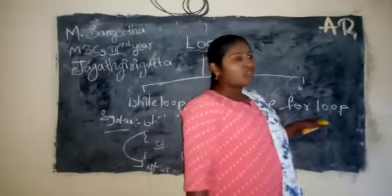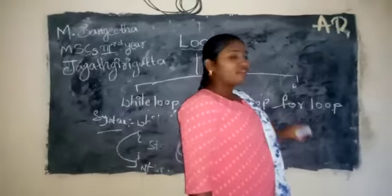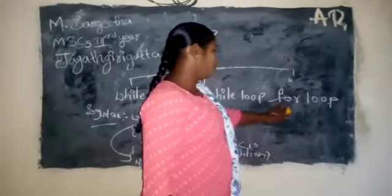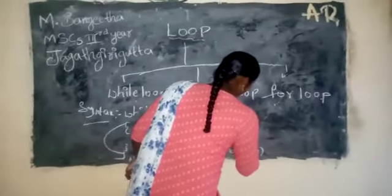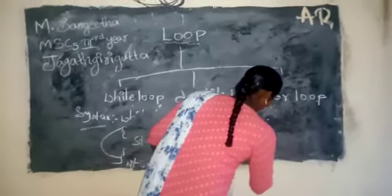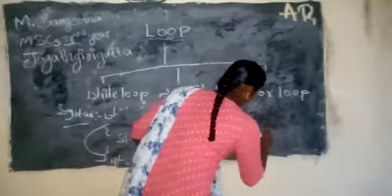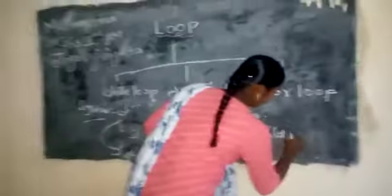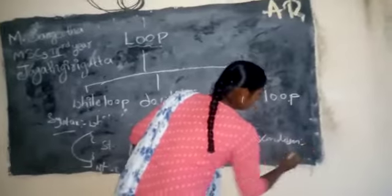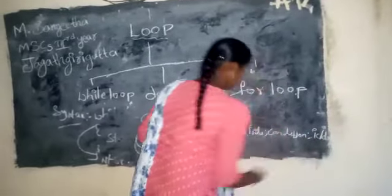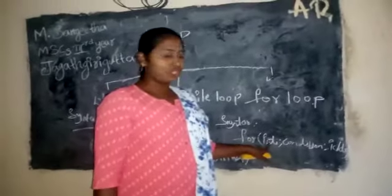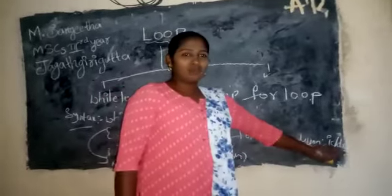Next is the for loop. For loop means it is able to perform any number of tasks at a time. The syntax for the for loop has three parts: first, we initialize some value; next, a condition; next, increment or decrement.